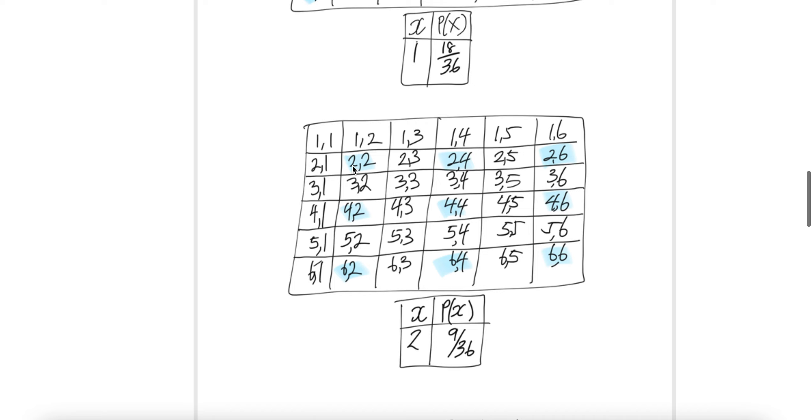Then two even. Even means like here, first die is even, second die is even. If you count the blue ones, you get nine. And then divided by the sample space, which is 36. That means everything here.